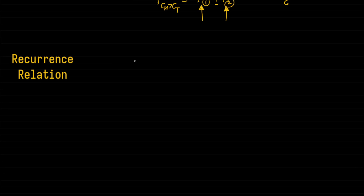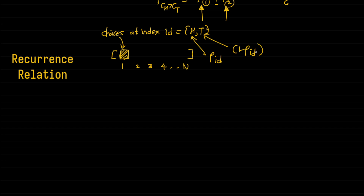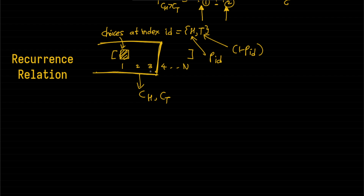The recurrence relation: since we want to find out the product of probabilities, we construct the sequence from left to right, from index 1 to N. At any index we have two choices: heads comes up with probability p_id, or tails comes up with probability 1 minus p_id. We also need to store the count of heads (ch) and count of tails (ct) after the choices considered so far, since we're constructing from left to right.